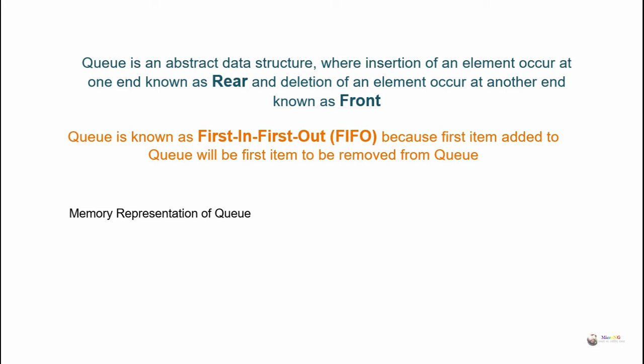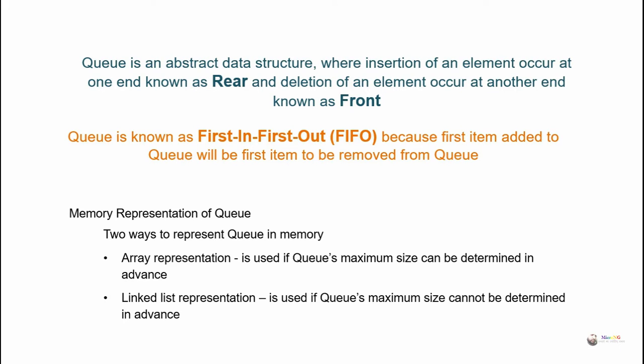Memory representation of Queue: there are two ways to represent a Queue in memory. First, array representation is used if the Queue's maximum size can be determined in advance. Second, linked list representation is used if the Queue's maximum size cannot be determined in advance.